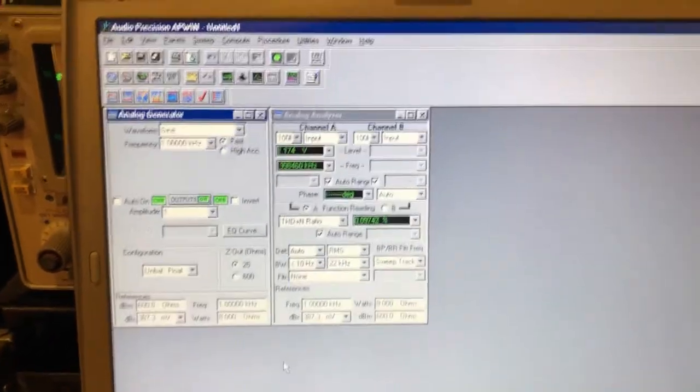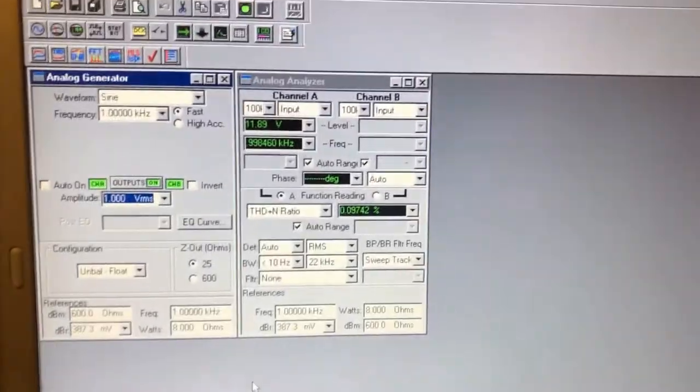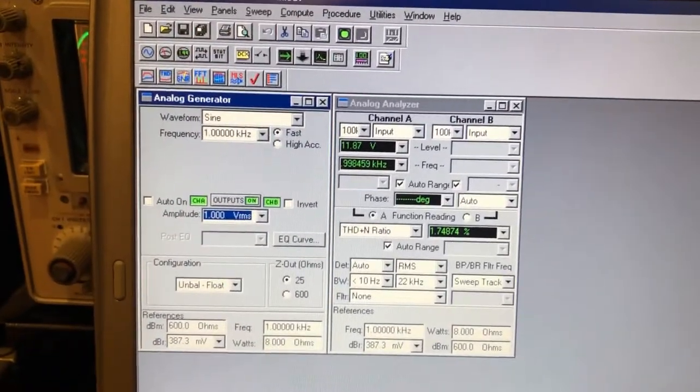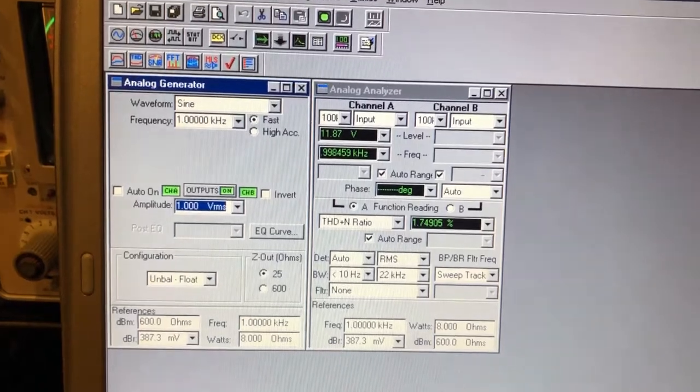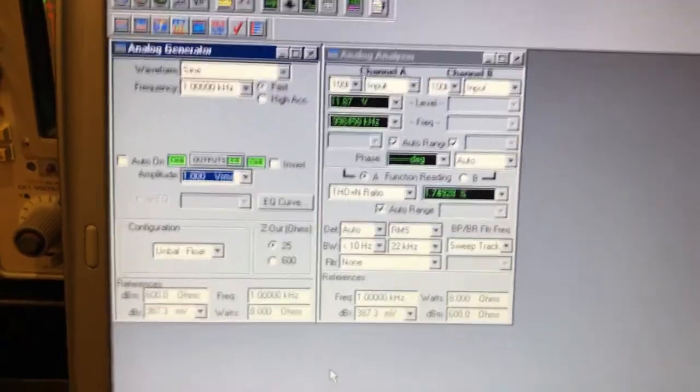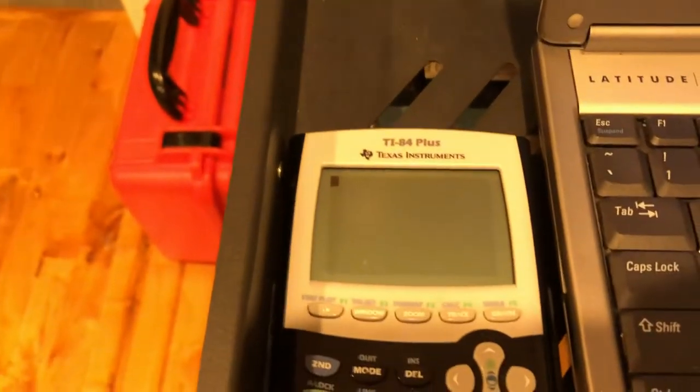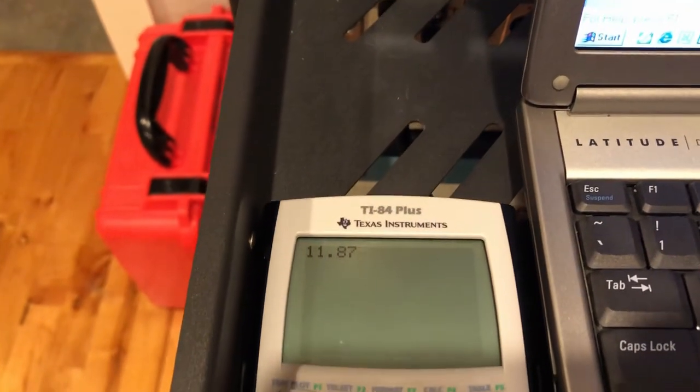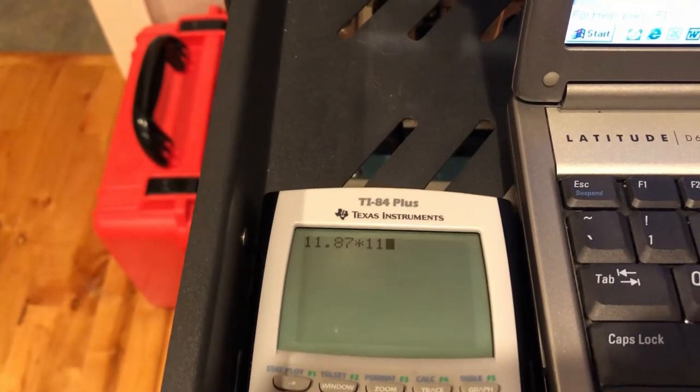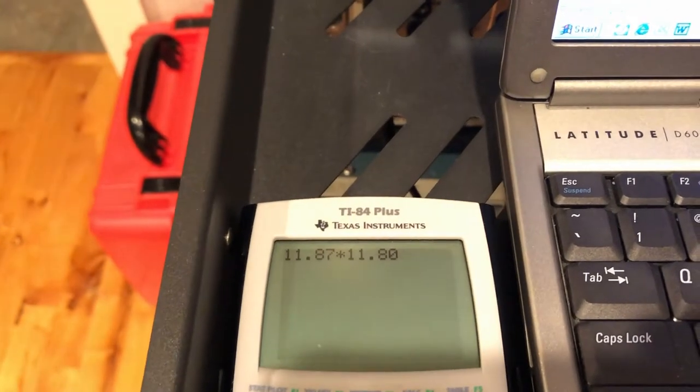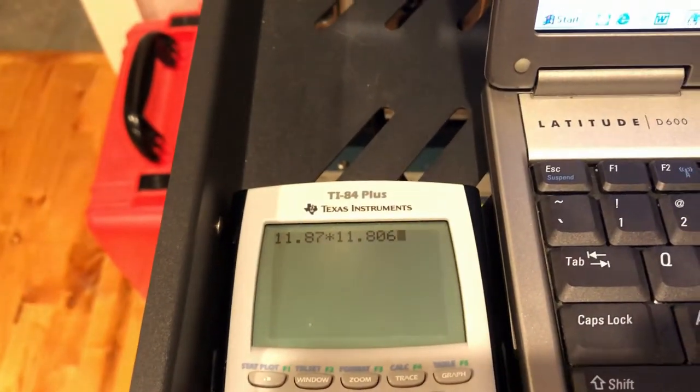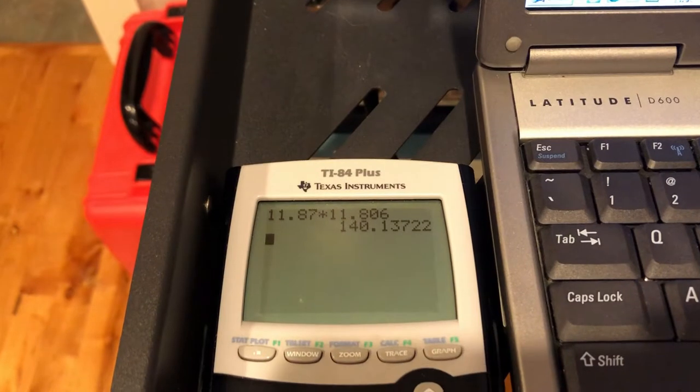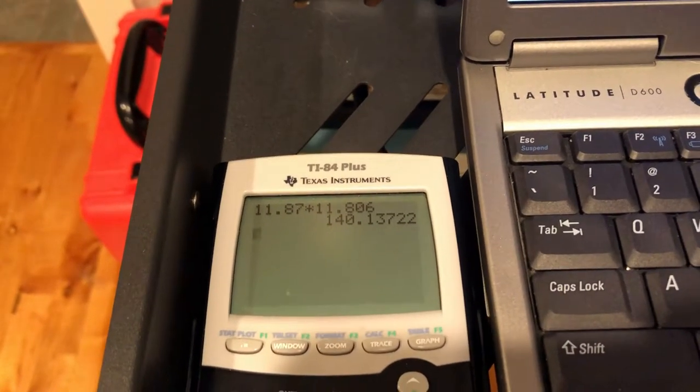So for example, here's what I'll run it at. I'll do one volt RMS input. And there you can see the output is 11.87 volts. So 11.87 multiplied by 11.806, which is our loading factor and voltage divider for the AP. We got 140 volts RMS.